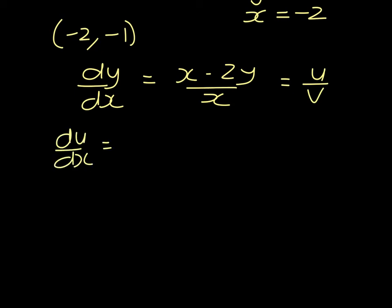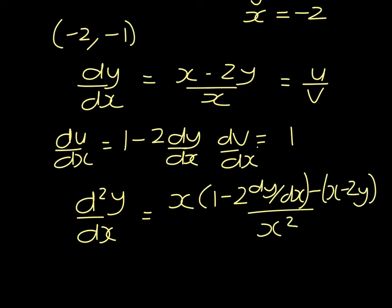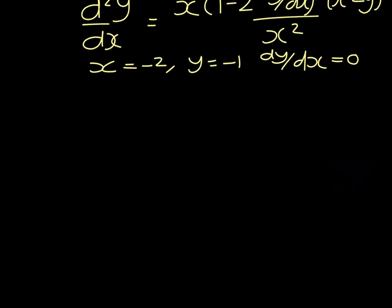Du dx will be 1 minus 2 dy dx. And dv dx will be 1. So the second differential will be v du dx minus u dv dx all over v squared. And we know that x equals minus 2, y equals minus 1, and dy dx equals 0. So let's substitute those in.